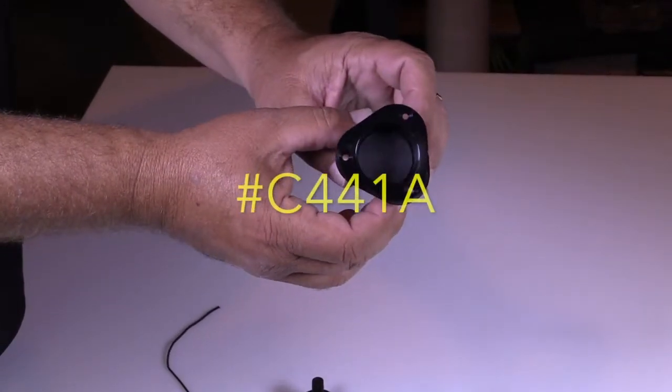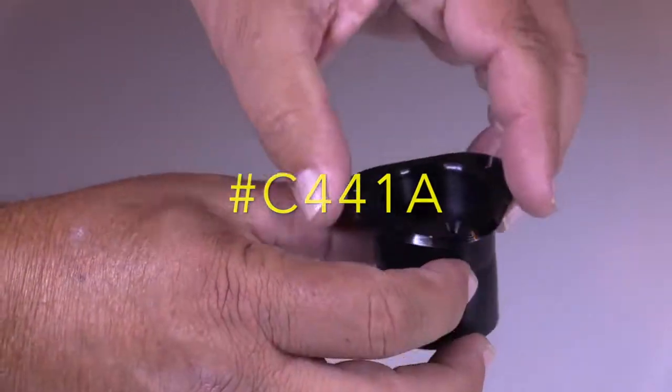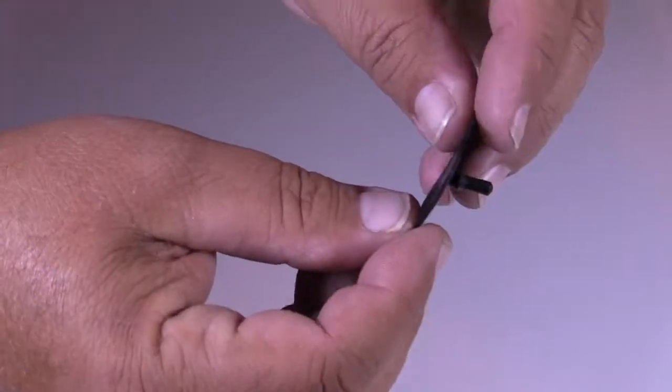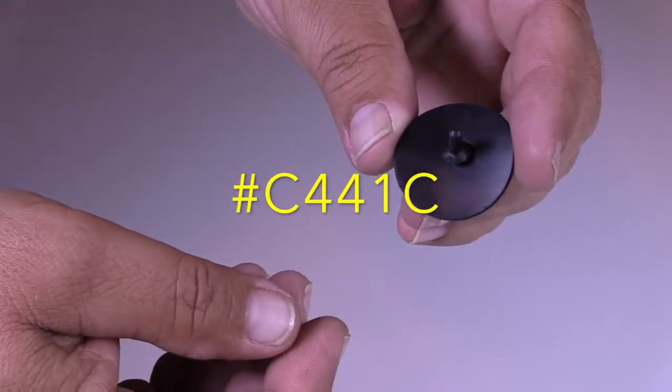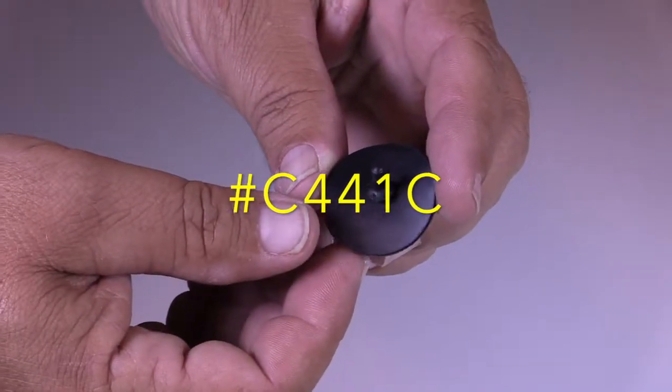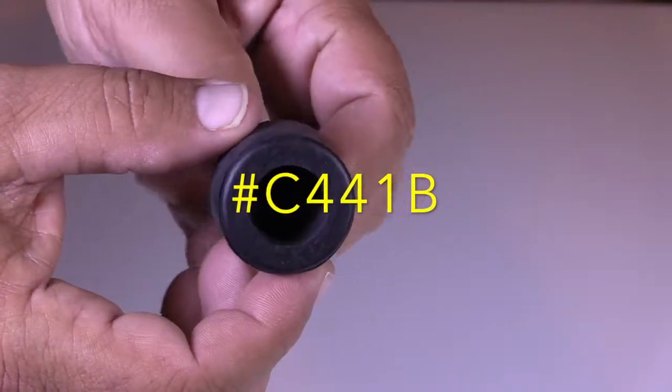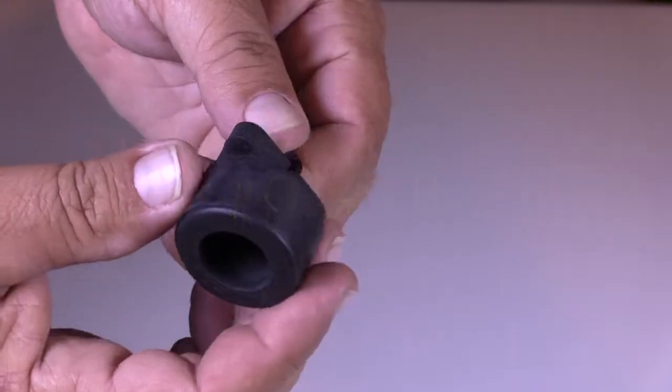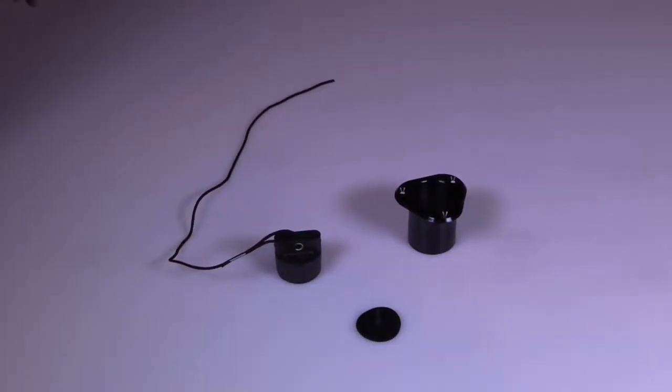part number C441A. The valve flapper by itself is C441C. The plug is part number C441B. This one requires really no maintenance. You just want to make sure that the area in here, which will be installed in the